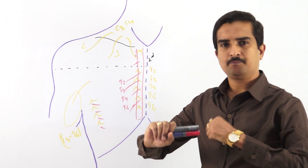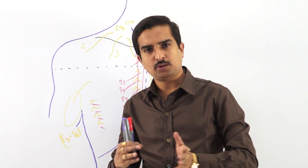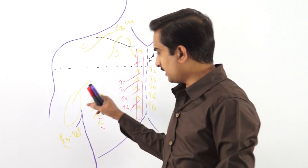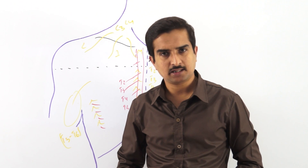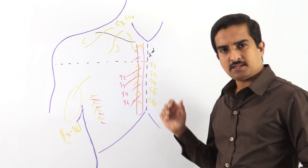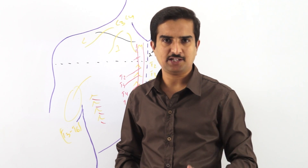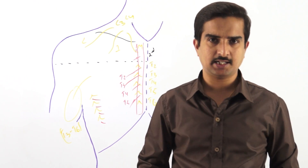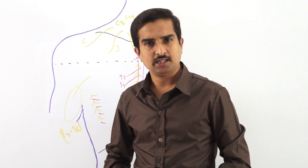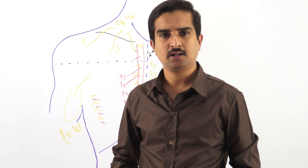The second group — the lateral cutaneous vessels — are derived from the posterior intercostal arteries and accompany the lateral cutaneous nerves. So to summarize: one group is accompanied with the anterior cutaneous nerves and consists of the perforating branches of the internal thoracic artery; the second group is accompanied with the lateral cutaneous nerves and consists of branches of the posterior intercostal arteries.